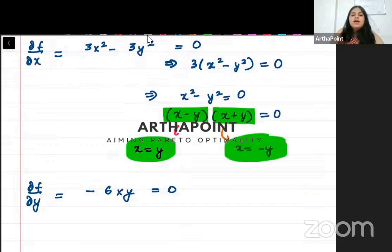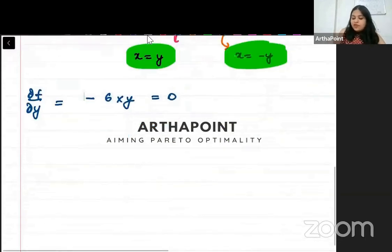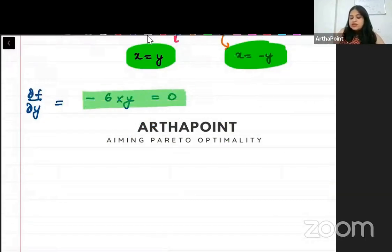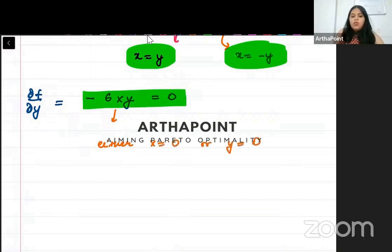I have got either x is y or x is minus y. From minus 6xy equals 0, either x is 0 or y is 0. Are you clear with it?